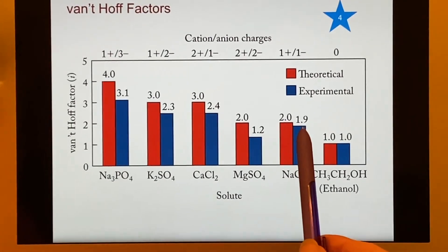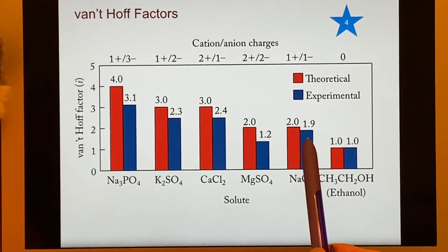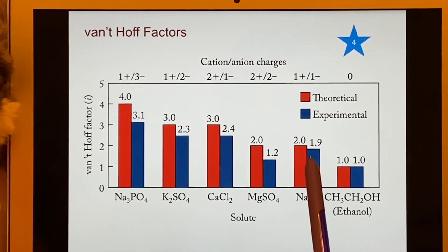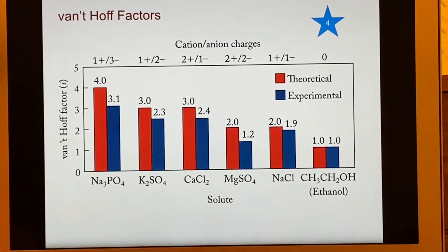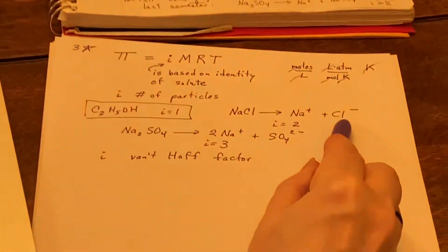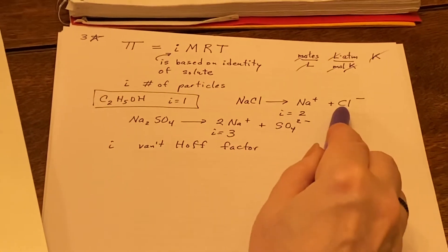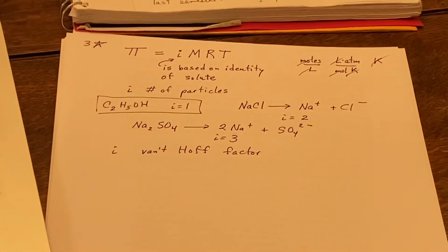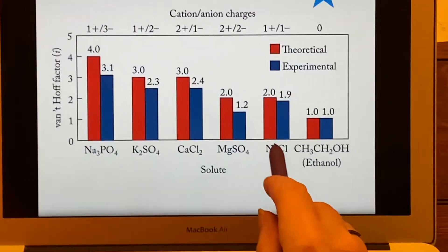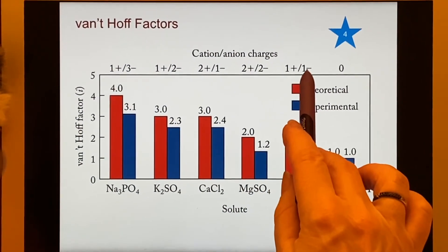Experimentally, we find that it's 1.9. So about one-tenth of the time, the sodium and the chloride will be bound together still instead of having completely separated. Those are a plus one and a minus one ion.